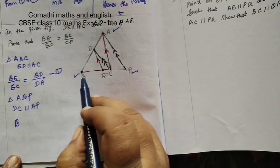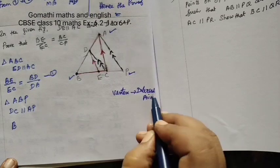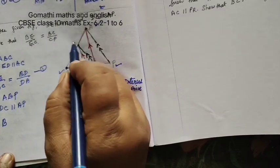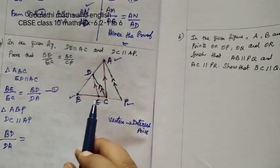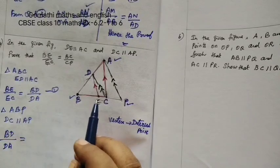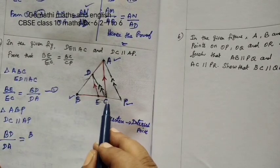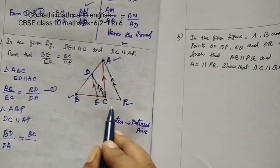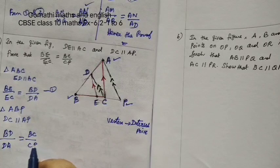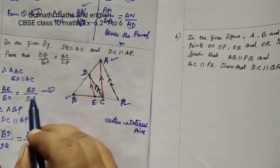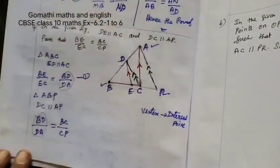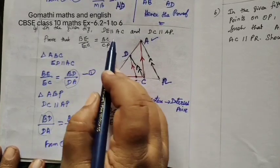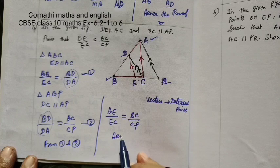DC is parallel to the vertex. We have to join the vertex. Starting point is B, B to intersecting point D. This is the vertex. B to intersecting point C, not E. That's why we will differ. BC by CP. BD by DA is common, so leave that. Write the remainder. BE by EC equal to BC by CP. Hence the proof.